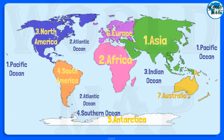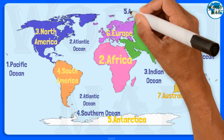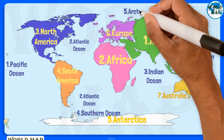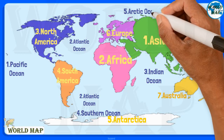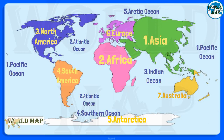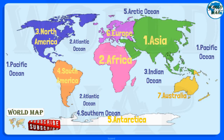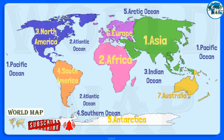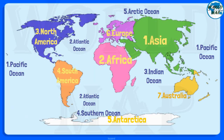Number 5: Arctic Ocean. The Arctic Ocean is the world's smallest and shallowest ocean of all five oceans. It is also the coldest and least salty ocean.